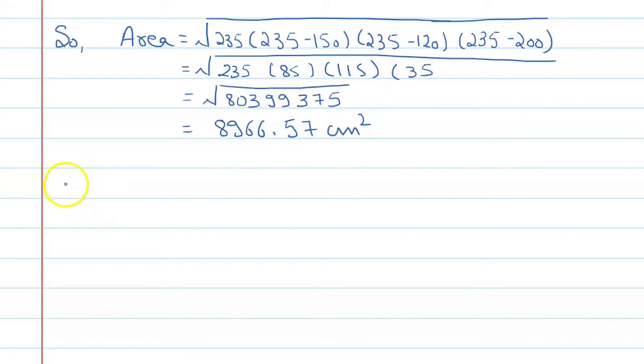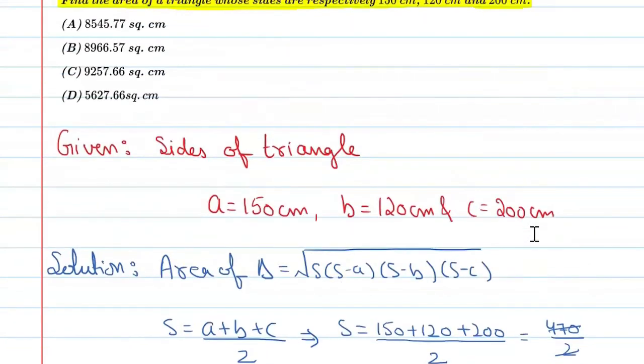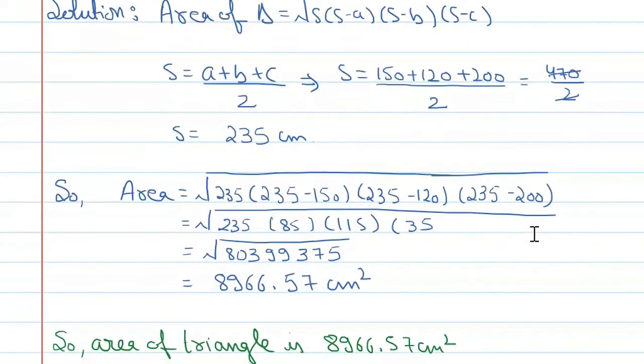So our final answer is: area of triangle is 8966.57 centimeters squared. So our correct option will be that it is B, right?